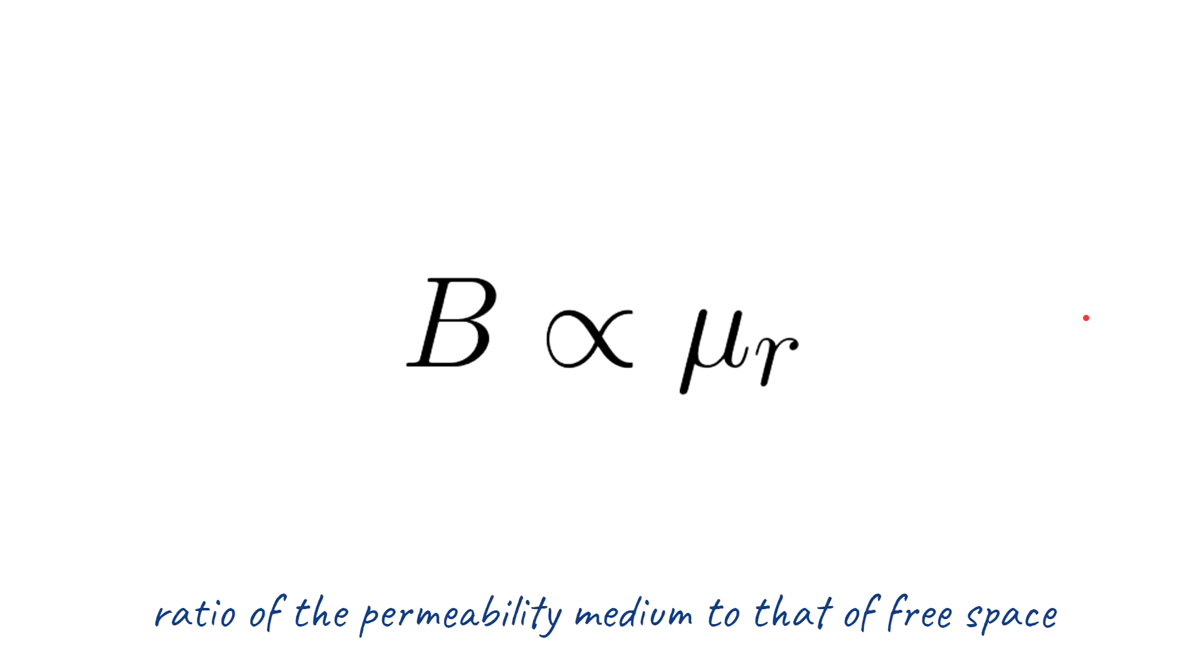Also, the magnitude of the magnetic field of a solenoid depends on the material of the core. The field can be greatly strengthened by the addition of an iron core, and it's measured by the relative permeability of that material. The relative permeability is the ratio of the permeability of a medium compared to that of free space.